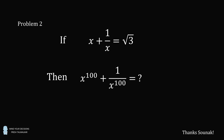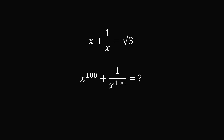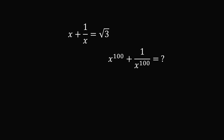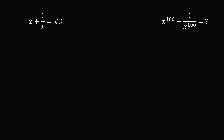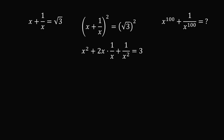Now let's solve Problem 2. There are many ways to solve it; I'll show one approach. First, we square the original equation: x plus 1 over x squared equals the square of root 3. Expanding the binomial gives x squared plus 2x times 1 over x plus 1 over x squared equals 3. Simplifying, x squared plus 2 plus 1 over x squared equals 3, so x squared plus 1 over x squared equals 1.